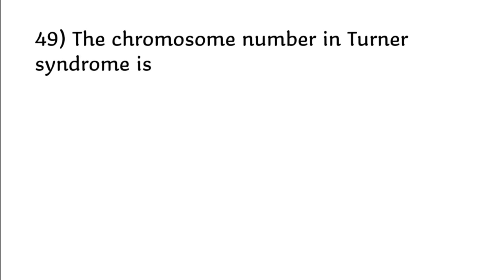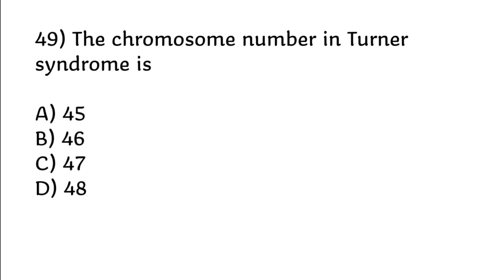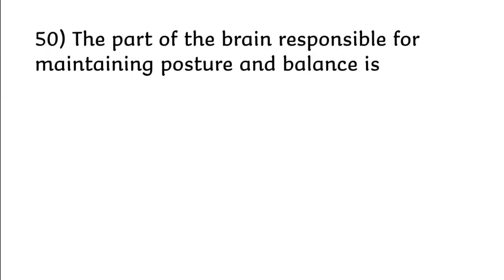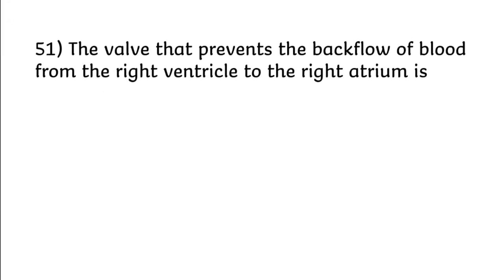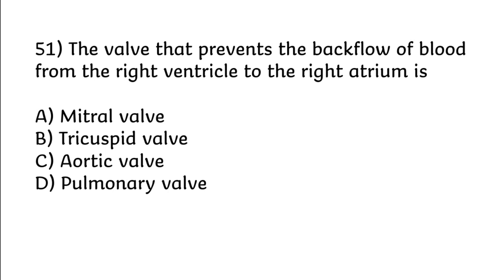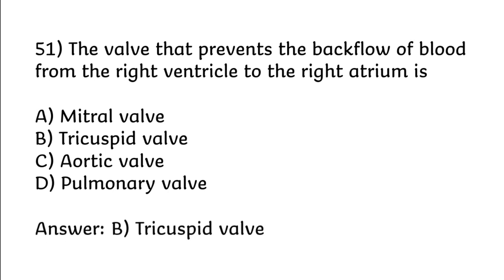The chromosome number in Turner syndrome is: 45, 46, 47, 48. Correct answer is option A: 45. The valve that prevents backflow of blood from the right ventricle to the right atrium is: mitral valve, tricuspid valve, aortic valve, pulmonary valve. Correct answer is option B: tricuspid valve.